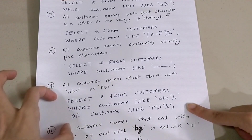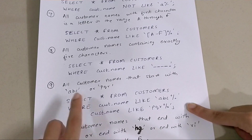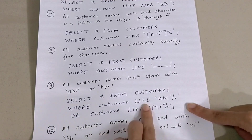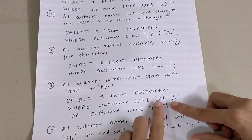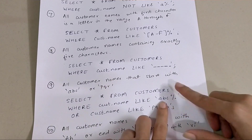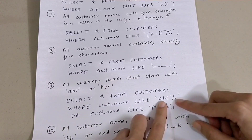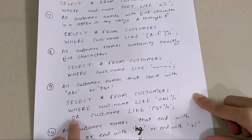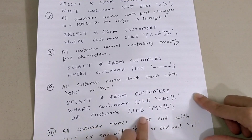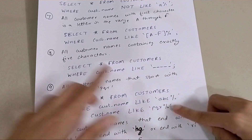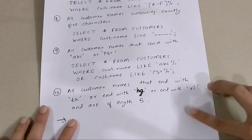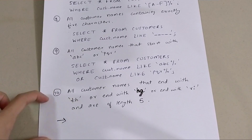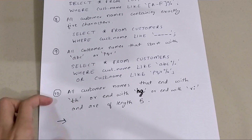The ninth question: all customer names that start with abc or pqr. Here I'll show you how to use OR in the query. The query is SELECT * FROM customers WHERE customer_name LIKE 'abc%' OR customer_name LIKE 'pqr%'. The percentage after each pattern means anything can follow.